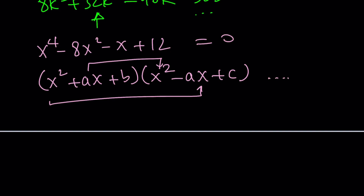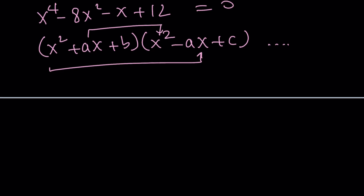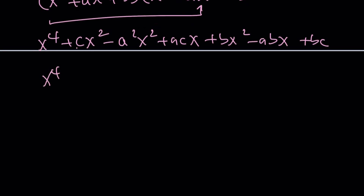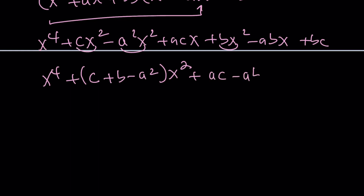Go ahead and proceed — you need to find the values of a, b, c. If you distribute the product, ignoring the x cubed terms, you get: coefficient of x squared is (c plus b minus a squared), coefficient of x is (ac minus ab), which factors as a(c minus b), and the constant term is bc.